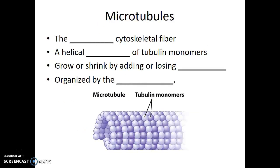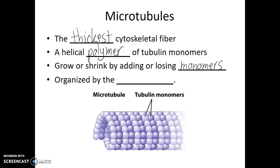The first of these that we'll talk about are the microtubules. They are the thickest of the cytoskeletal fibers. They are a helical polymer of tubulin monomers. These microtubules grow or shrink by adding or losing monomers.